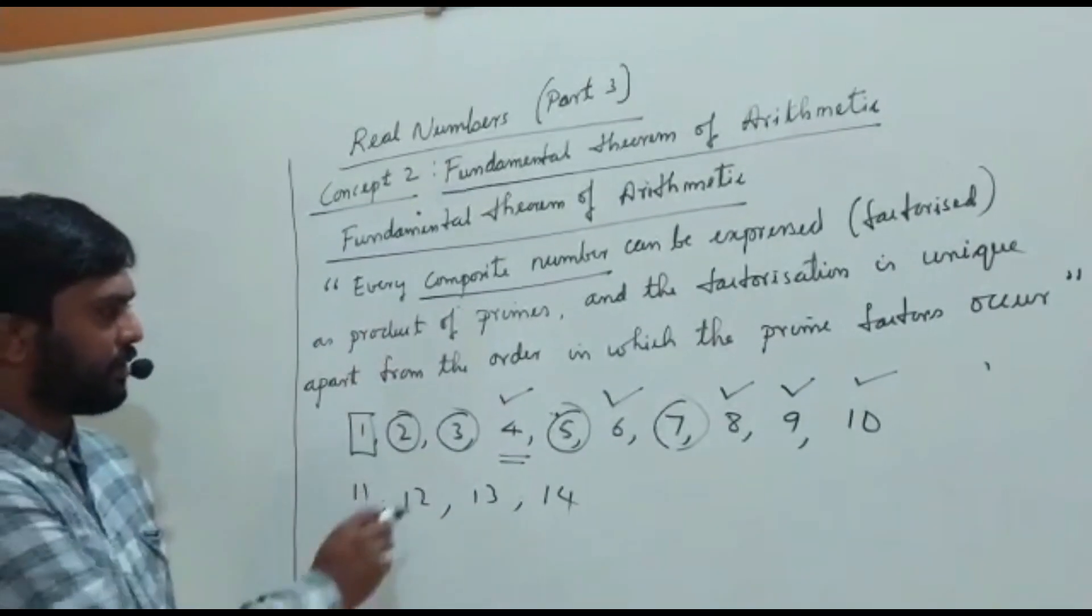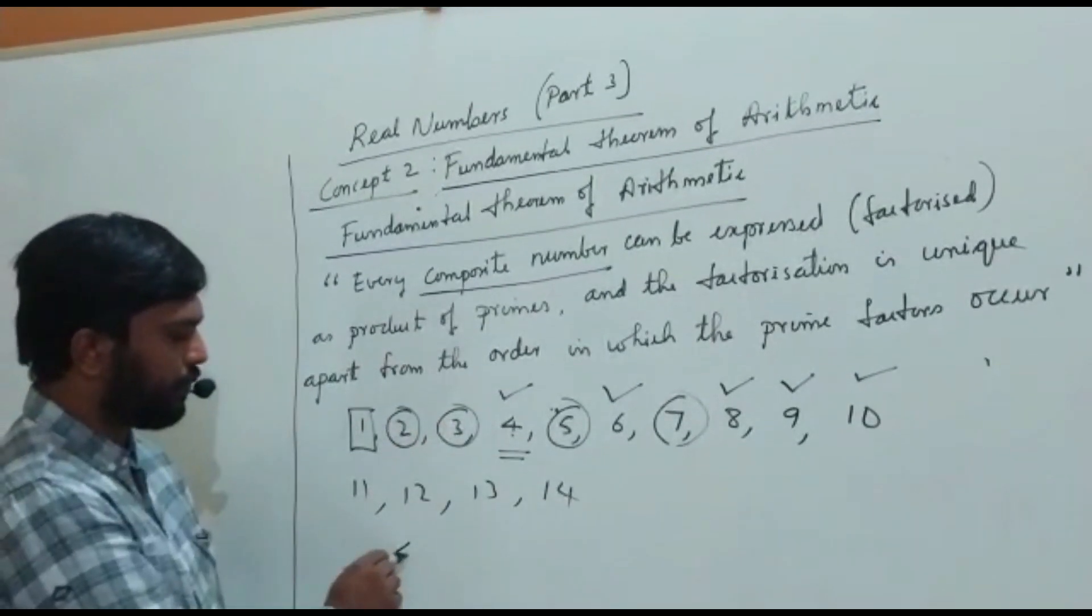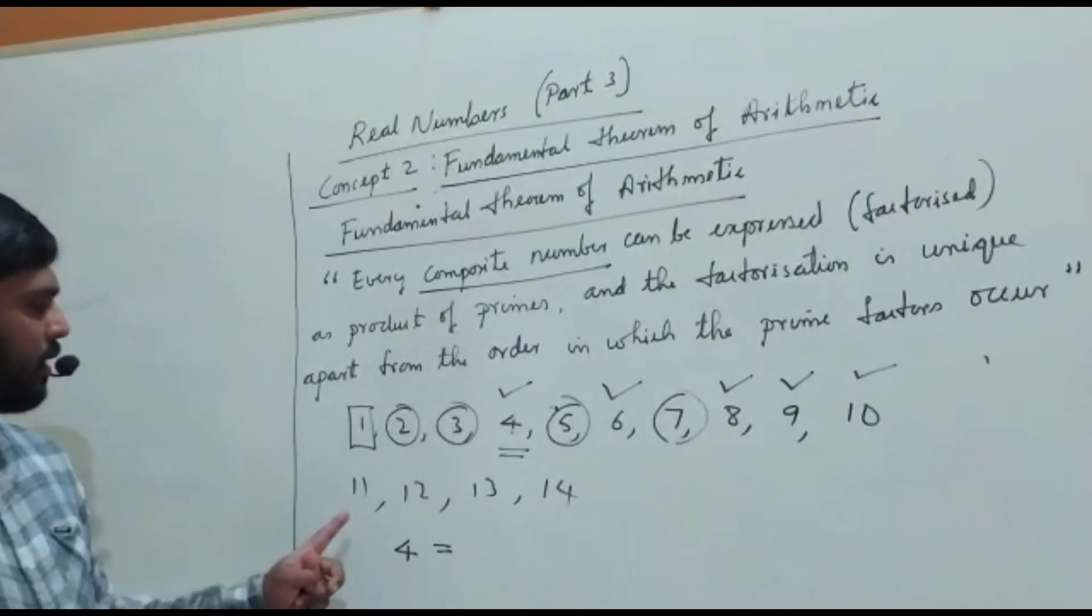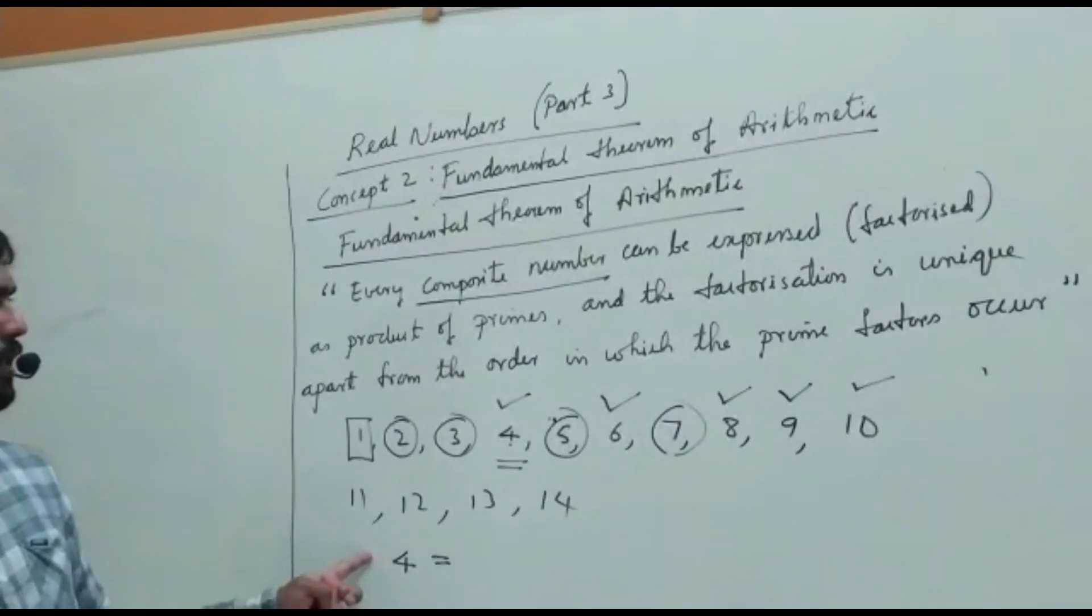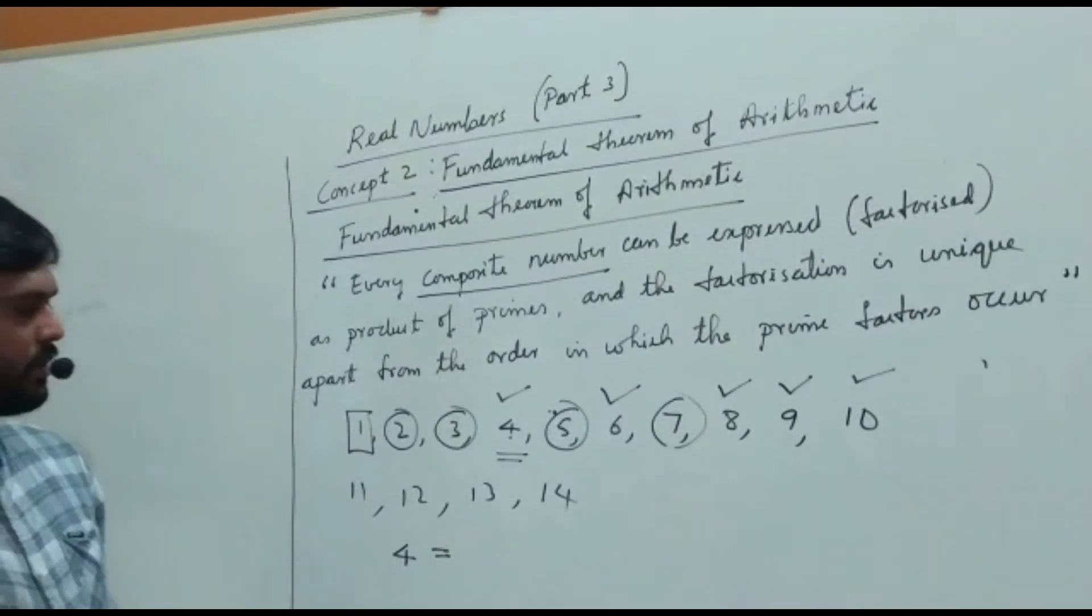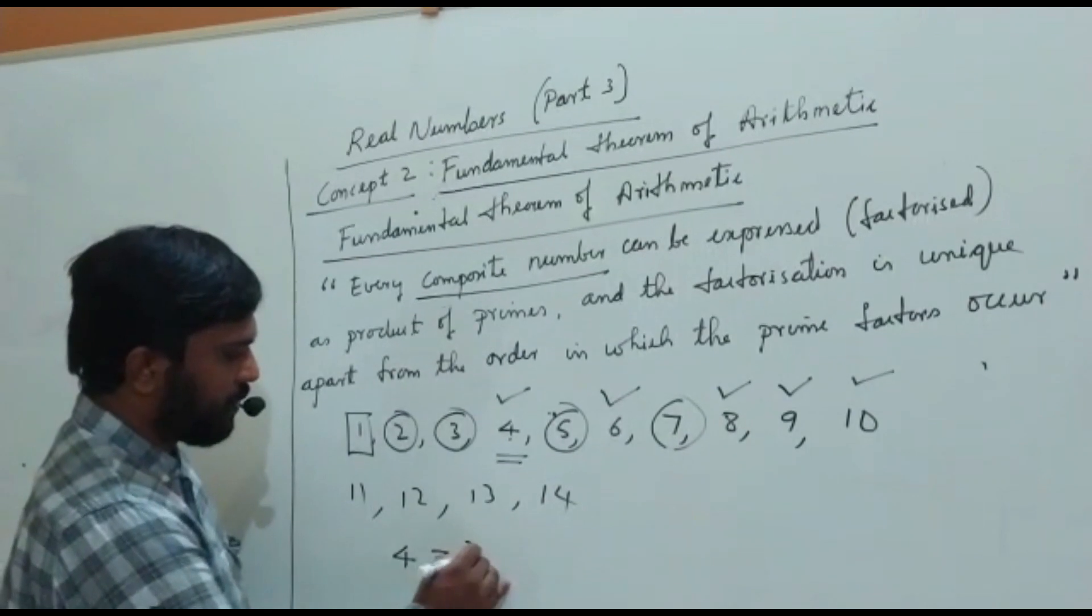So every composite number, for example, you take 4. 4 is a composite number. This 4 can be expressed in the form of prime numbers. 4 can be written as 2 into 2.